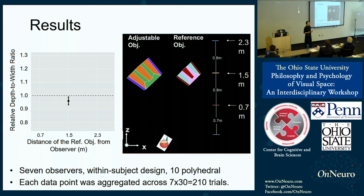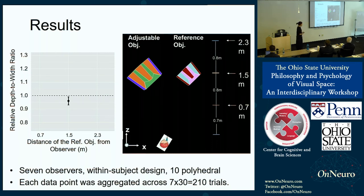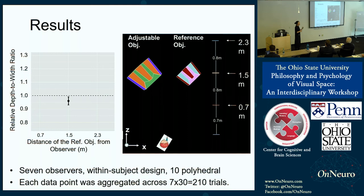Our data show that when the two objects are presented at the same viewing distances, observers achieve nearly perfect match — the group mean is close to the dashed line at 1. However, a perfect match should not be confused with veridicality; it can only suggest that the two objects are distorted by the same amount. And this claim is confirmed by our data: as objects are presented at different viewing distances, this perfect match performance is no longer maintained, and observers will either overstretch or over-compress the adjustable object.